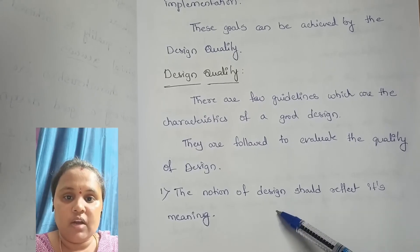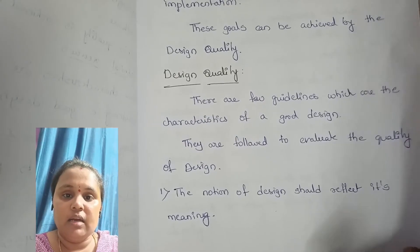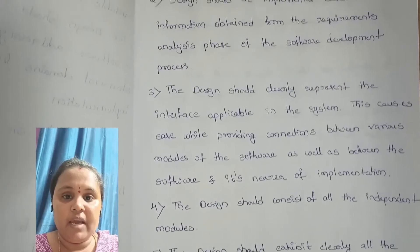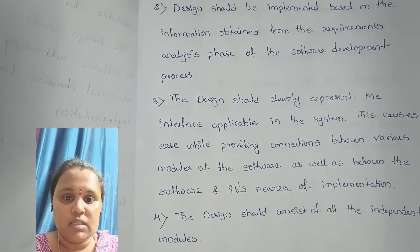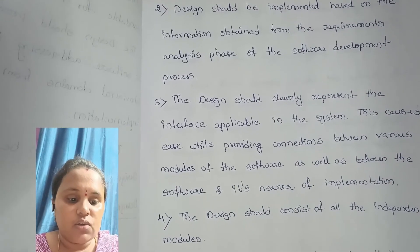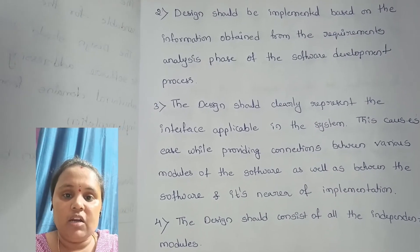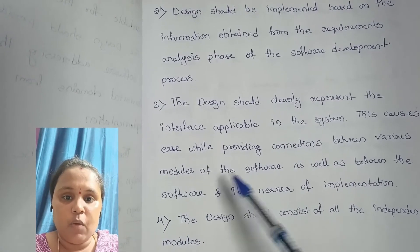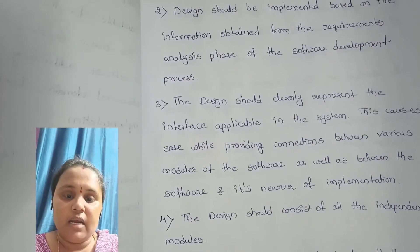The first guideline is that the concept of design should reflect its meaning. The second guideline is that the design should be implemented based on the requirement analysis phase from the software development process. The third guideline is that the design should clearly represent the interfaces applicable in the system — providing clear connections among the different modules of the software system.